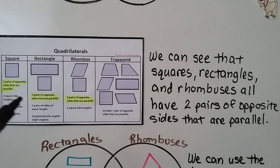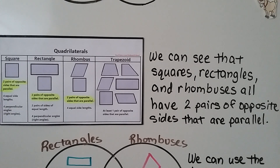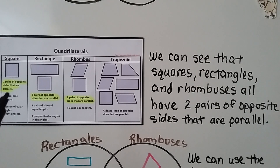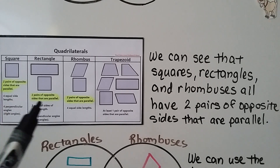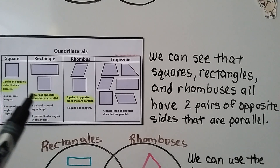I'm going to have this chart of quadrilaterals on my Facebook page so you can take a screenshot or print it. We can see that squares, rectangles, and rhombuses all have two pairs of opposite sides that are parallel. Look at that — they all share that.